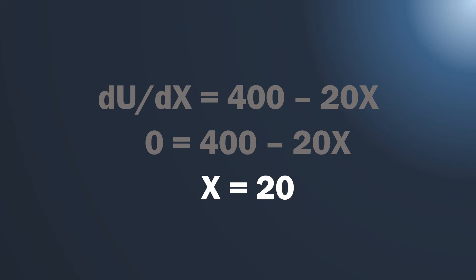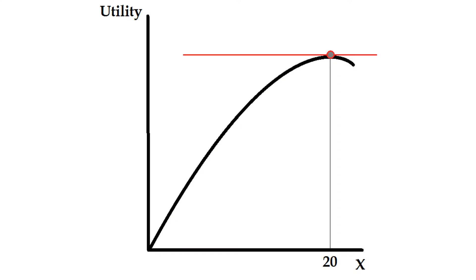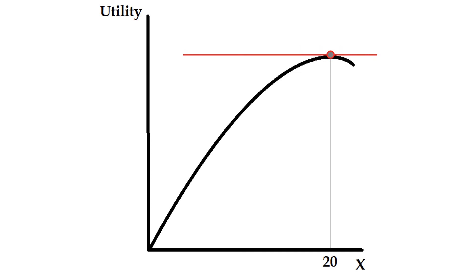Setting 400 − 20x = 0 and solving algebraically: 20x = 400, so x = 20. We know we'd be maximizing our utility in an unconstrained setup when x equals 20 given this utility function. Taking the first derivative and setting it equal to zero, we find this local maxima — x is maximized at the point 20.